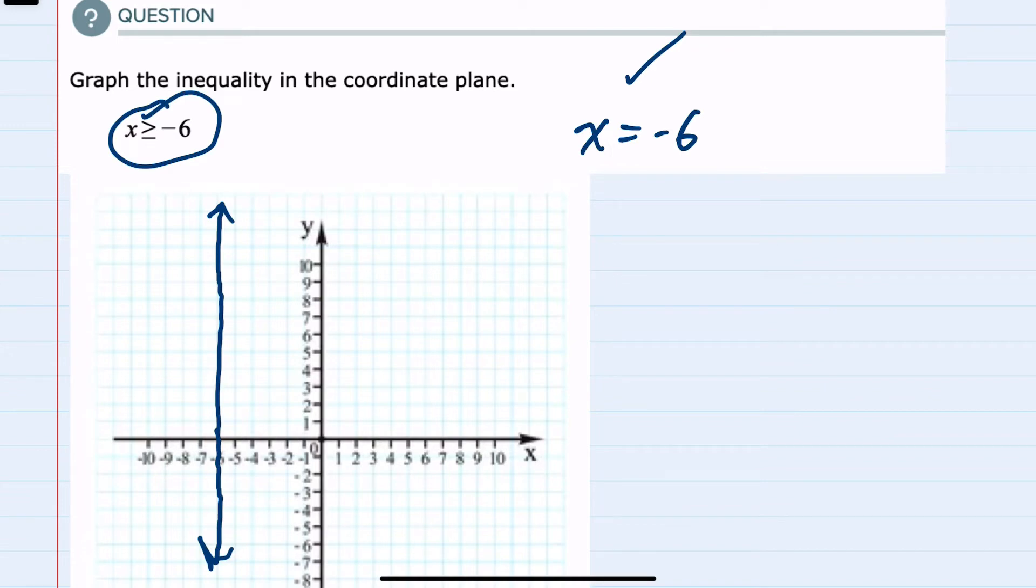Then I just need to determine which side of the line to shade. To do so, we can use a test point, and the origin, if it's not on the line, always makes for a nice test point.